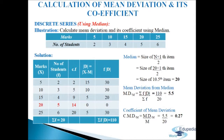Last column f·d: 15×2=30, 10×3=30, 5×4=20, 0×5=0, 5×6=30, giving sigma f·d = 110. Mean deviation from median MD(m) = sigma f·d / sigma f = 110 / 20 = 5.5. Coefficient of mean deviation C·MD(m) = MD(m) / M = 5.5 / 20 = 0.27.